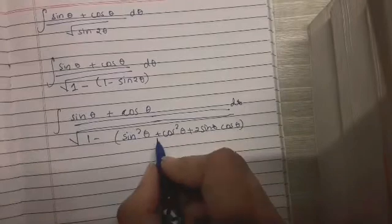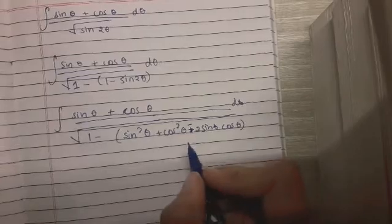So this becomes sin theta plus cos theta, sorry this is minus, sin theta minus cos theta the whole square.